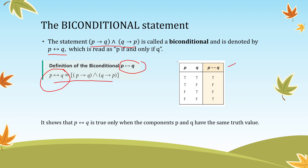Now let's talk about the truth table for the biconditional statement. The biconditional statement is true only when the components P and Q have the same truth value. For example, if both are true, the result is true. When both are false, the result is also true. If one of the statements is false, then the truth value of the biconditional statement is false.